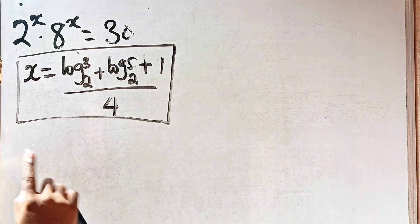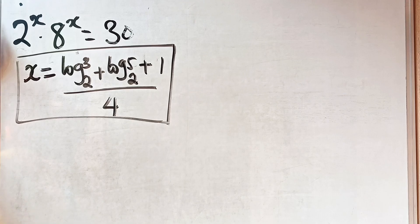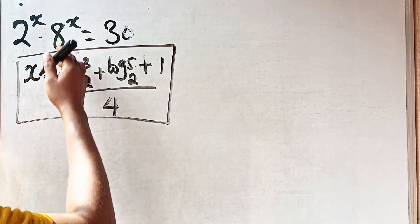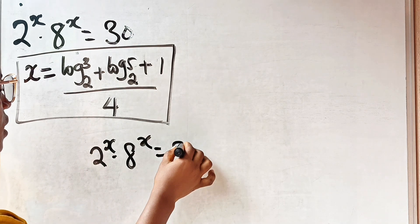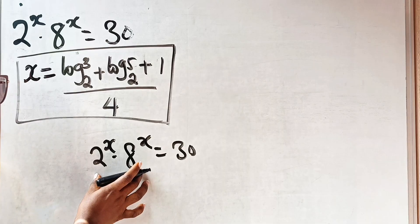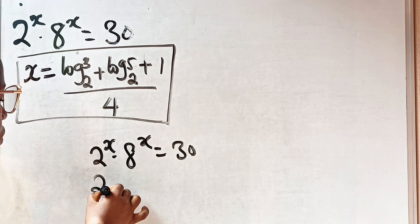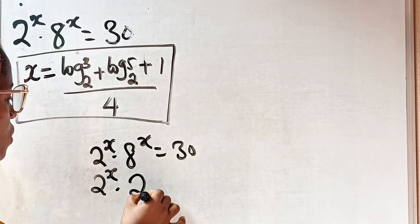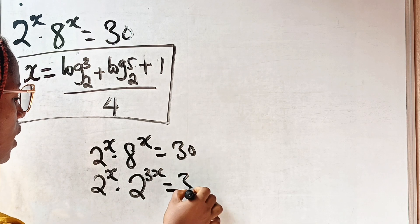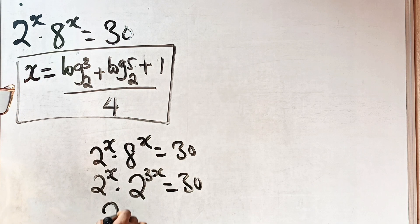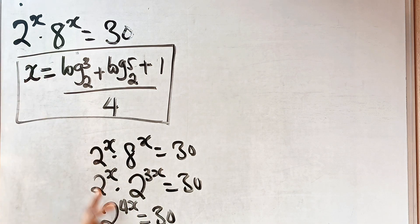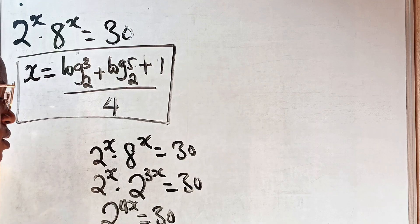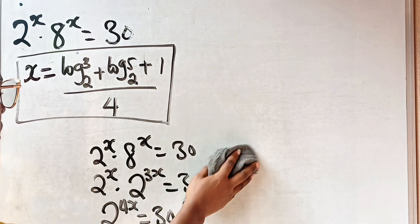Let's go ahead and verify this answer satisfies the equation. We simplified the original equation as 2 to the power of x multiplied by 8 to the power of x equals 30, which became 2 to the power of x times 2 to the power of 3x equals 30, and we ended up with 2 to the power of 4x equals 30. I'm going to prove the answer using this.